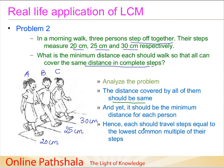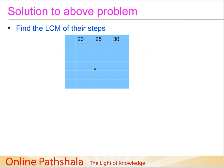Each person should travel a distance equal to the lowest common multiple of the step sizes. We use LCM because it is the smallest number for which each of 20, 25, and 30 is a factor. In other words, we want the minimum distance that can be divided equally by 20, 25, and 30 — that is why we apply the concept of LCM here.